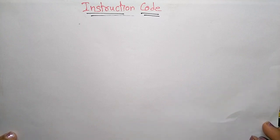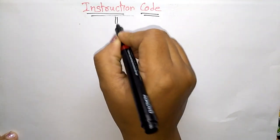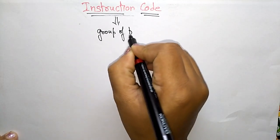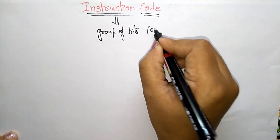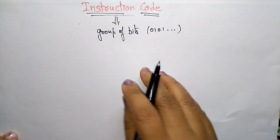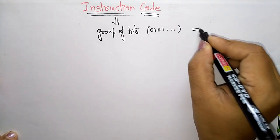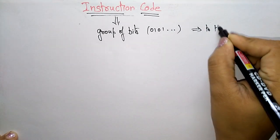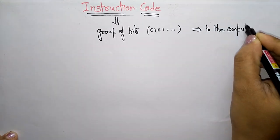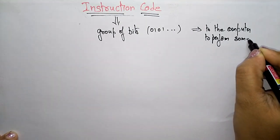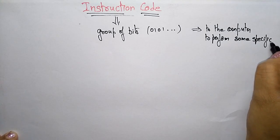Coming to our next topic, that is instruction code. What do you mean by instruction code? Instruction code is nothing but a group of bits — in the form of ones and zeros. Instruction code is a group of bits that tells the processor to perform some specific task. It says to the computer to perform some specific task.